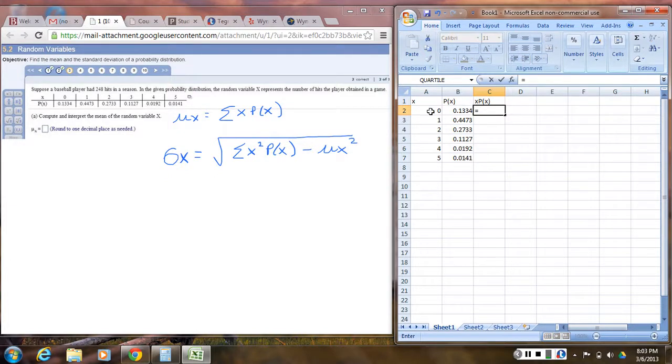I type an equal sign in first and I go, where's X in this row? It's the zero. So I click on the zero times is asterisk. And where's the P of X in this row? It's the 0.1134. So I click on that and I hit enter. And zero times 0.1334 is zero. That's good.